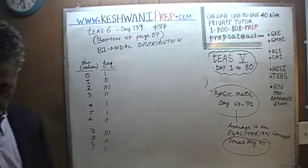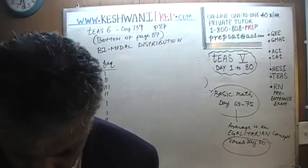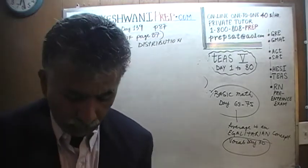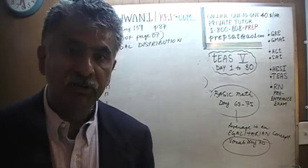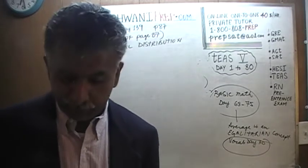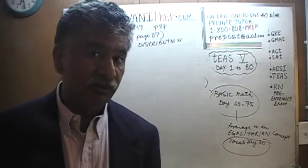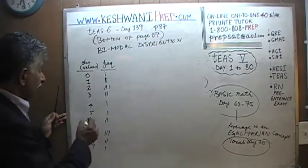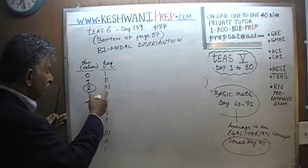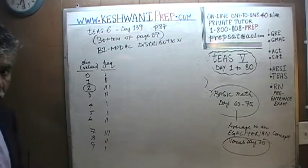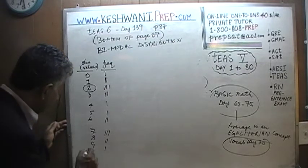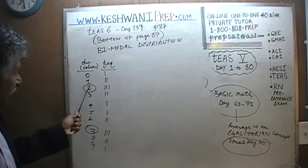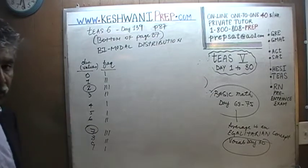What's the mode here? Mode, as we already know, means which observation appears most frequently. It's a tricky question here because a score of 2 appears 3 times — 3 people had a score of 2. But a score of 7 also appears 3 times — 3 people had a score of 7.